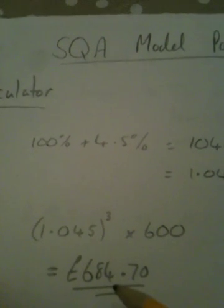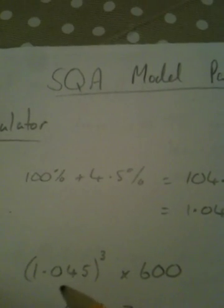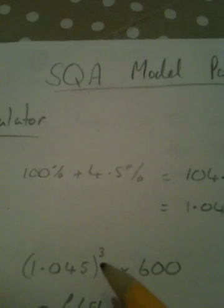Which comes out to 684 pounds 70 pence to the nearest penny. So find the multiplier—it's three years, so we're going to cube it and multiply by the original amount.